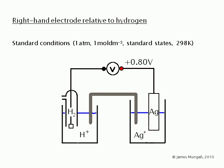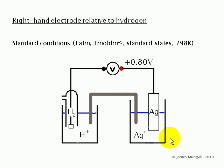This is a review of how we measure standard electrode potentials. The measured electrode potential is the right-hand electrode relative to a hydrogen half cell under standard conditions: one atmosphere, one mole per decimetre cubed standard states, 298 Kelvin. Here is the way that the Ag/Ag⁺ electrode would be measured, and as we can see this gives a value of plus 0.8 volts.